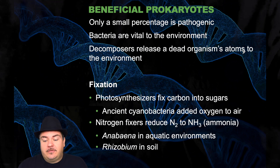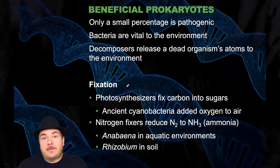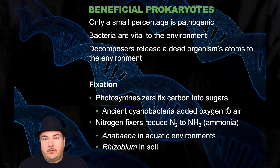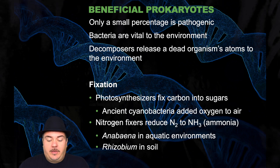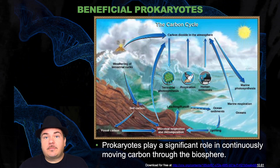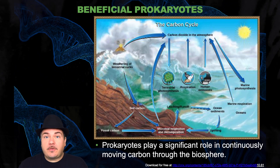Bacteria are vital to the environment. Decomposers release a dead organism's atoms back to the environment. Bacteria that can do photosynthesis fix carbon into sugars like glucose. The ancient cyanobacteria added oxygen to our air — that is what gives us the oxygen we breathe right now. Bacteria are also nitrogen fixers; they reduce nitrogen gas to ammonia, which can then be utilized by living organisms. Prokaryotes play a significant role in continuously moving carbon through the biosphere.